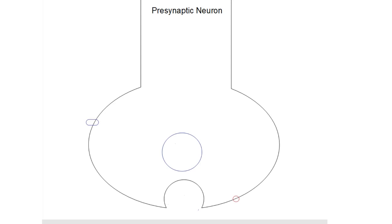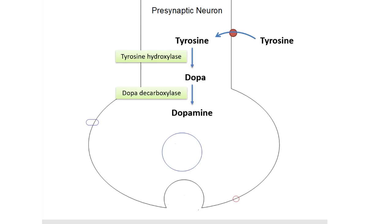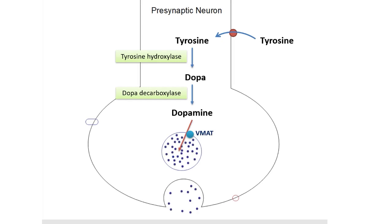Now let us look at the synthesis, storage and release of dopamine. Dopamine is synthesized from the amino acid tyrosine. Tyrosine is first converted into DOPA by the enzyme tyrosine hydroxylase. DOPA is then decarboxylated to obtain dopamine. Dopamine is taken inside the vesicle by a transporter known as VMAT or vesicular monoamine transporter. When the action potential reaches the nerve terminal, dopamine is released into the synaptic cleft.